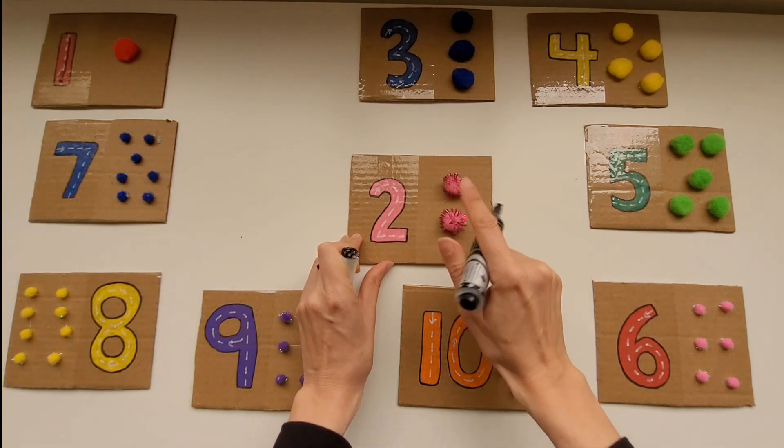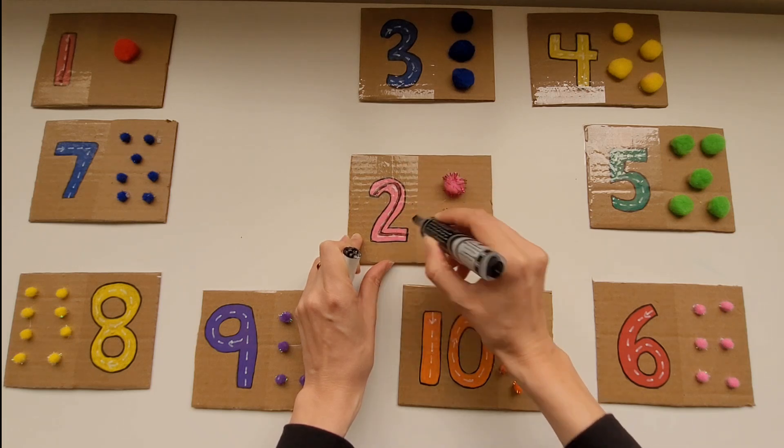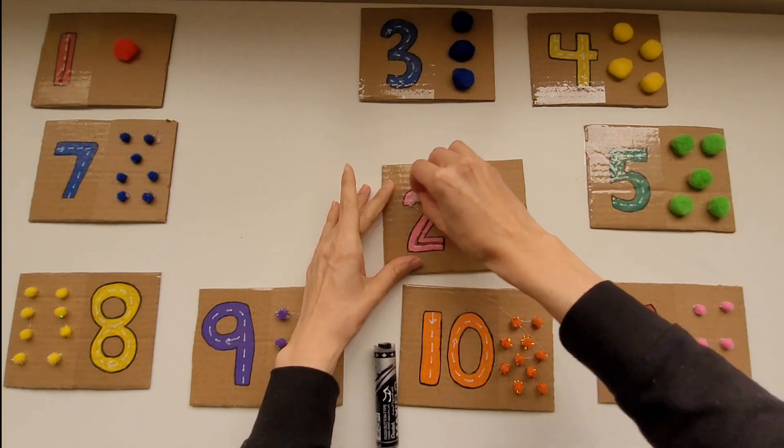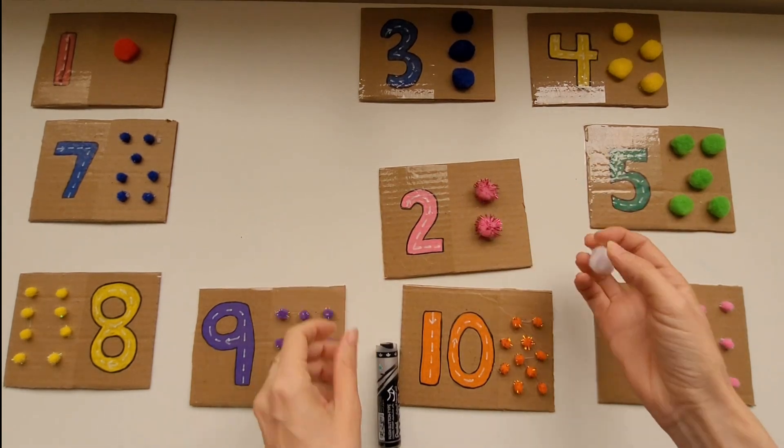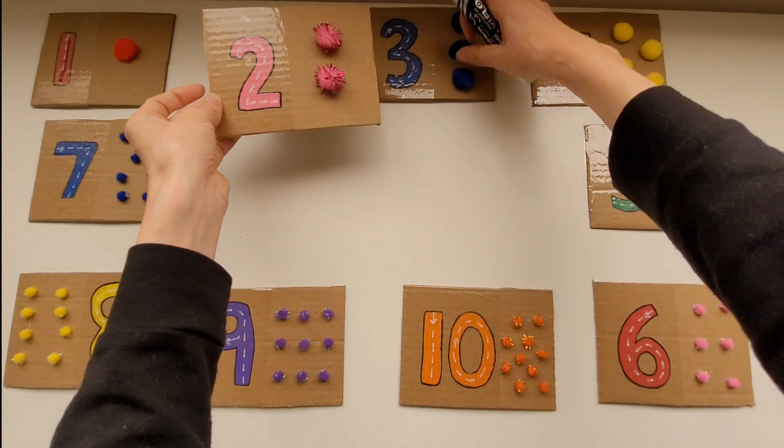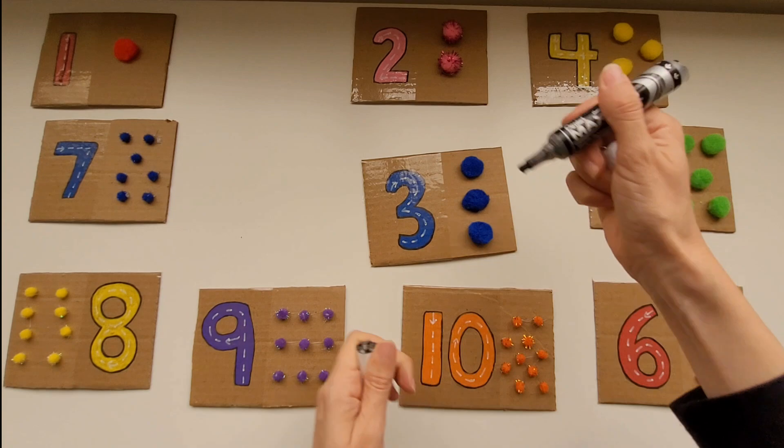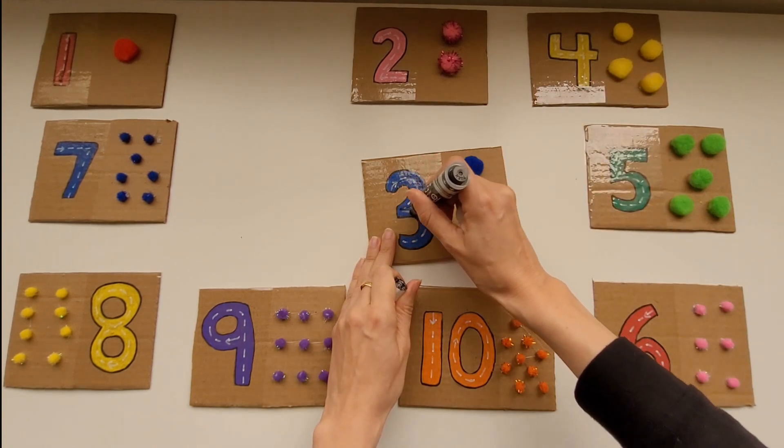Your little one can practice over and over. They're going to count the pom-poms and then trace the number with a dry erase marker. After that, you can erase what they've traced with a dry erase board eraser or with a tissue.